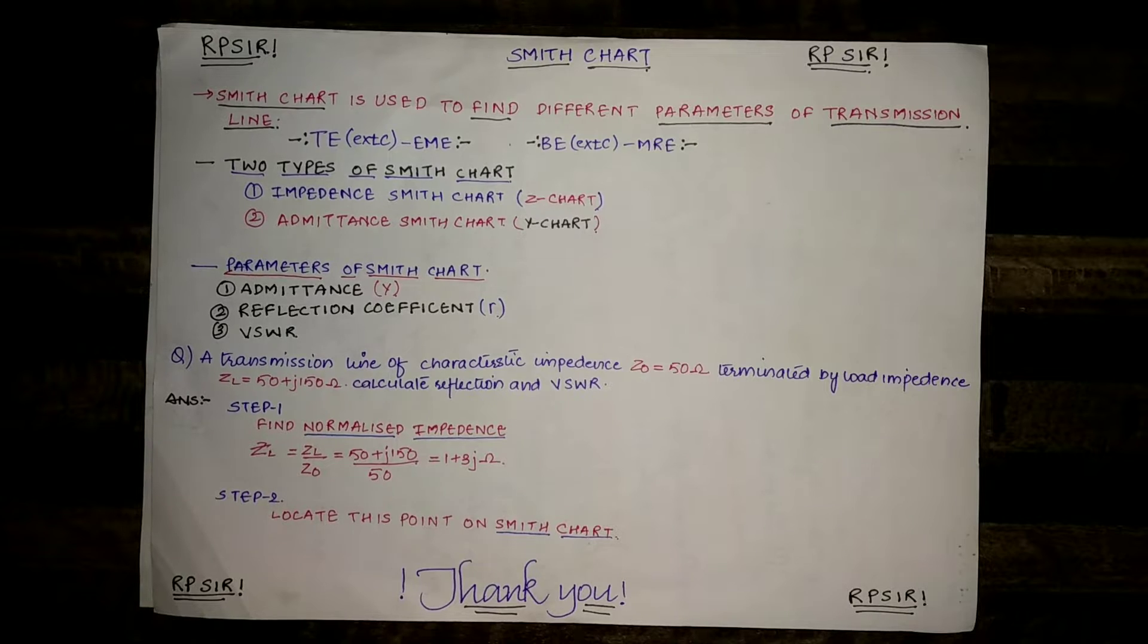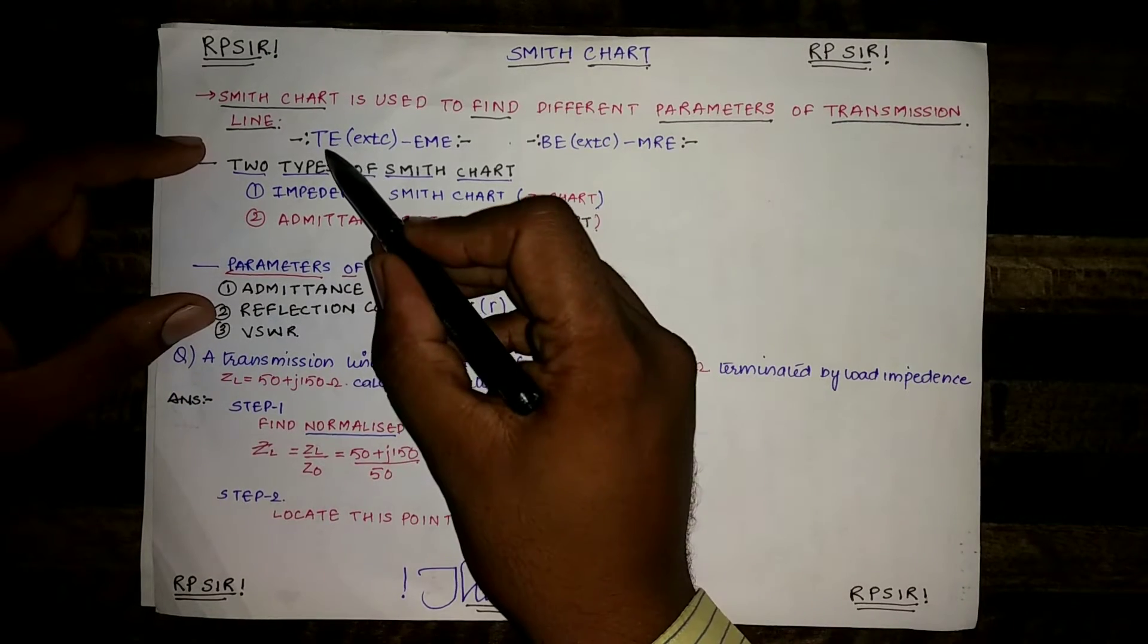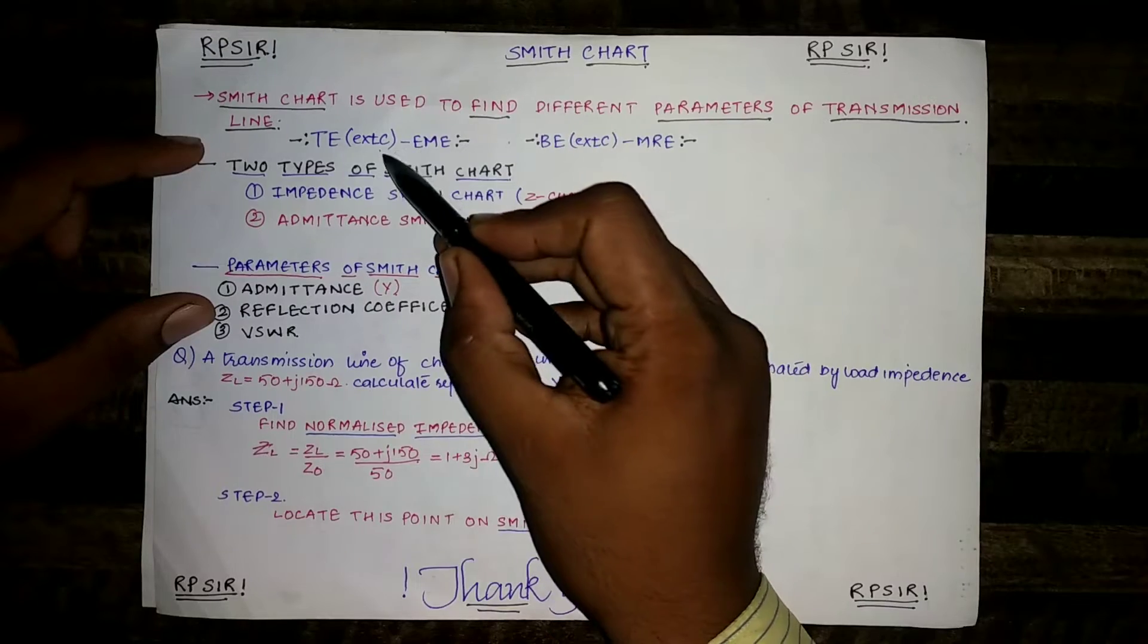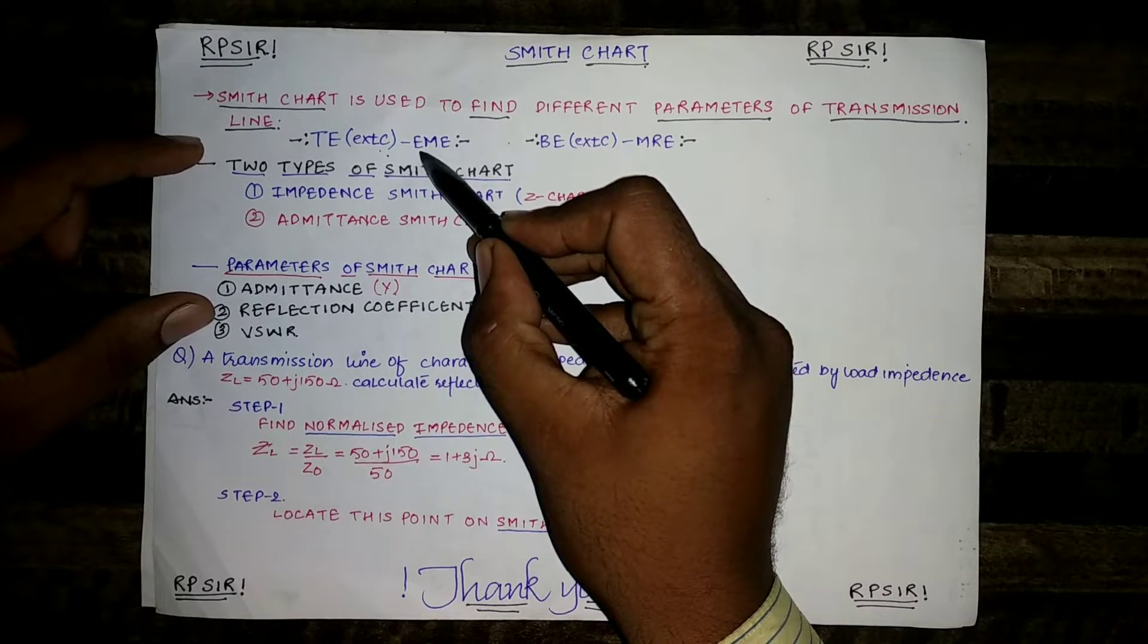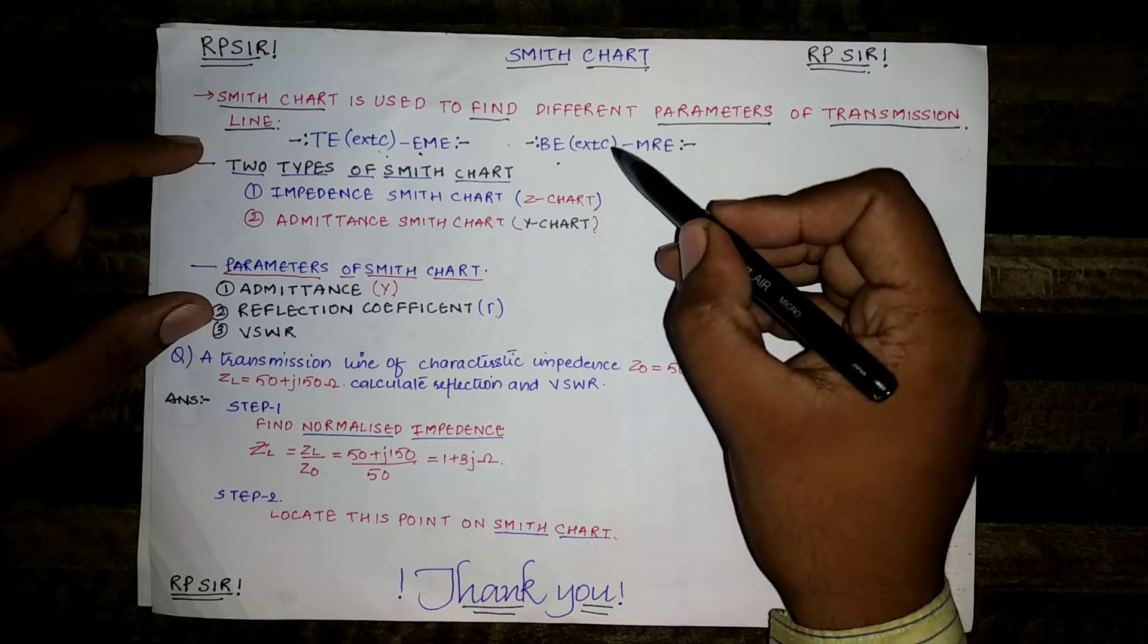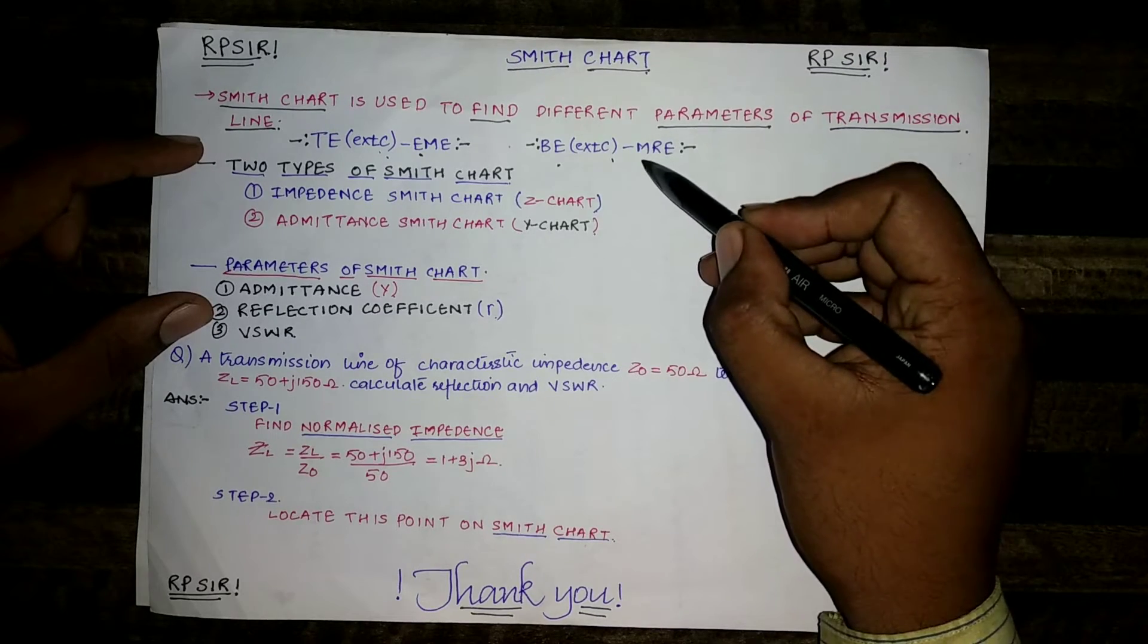Today I am going to explain you Smith chart. Smith chart is used to find different parameters of transmission line. It is there in third year EXTC syllabus in the subject Electromagnetic Engineering. It is also there in final year EXTC engineering MRE subject.